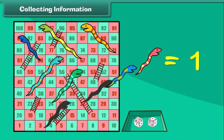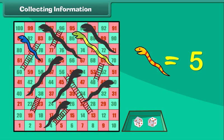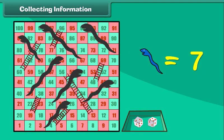1, 2, 3, 4, 5, 6 and 7. There are 7 snakes.